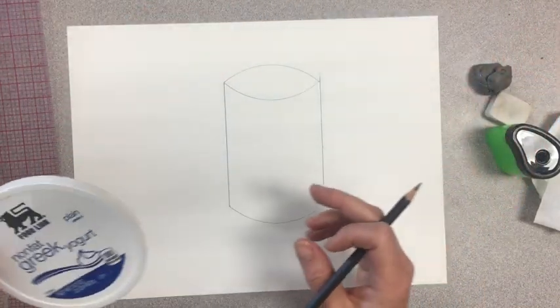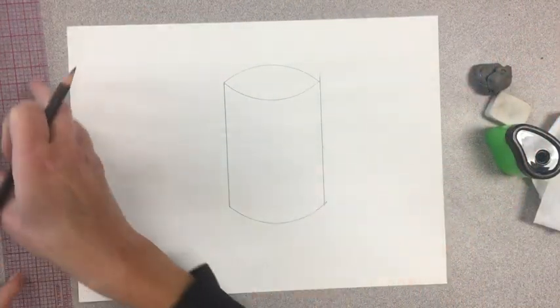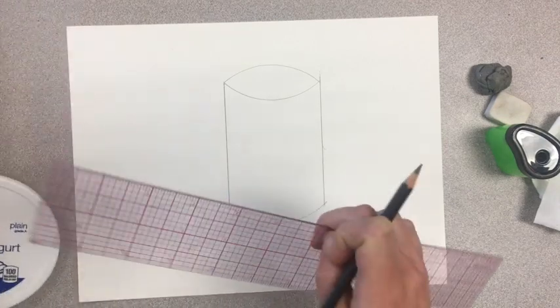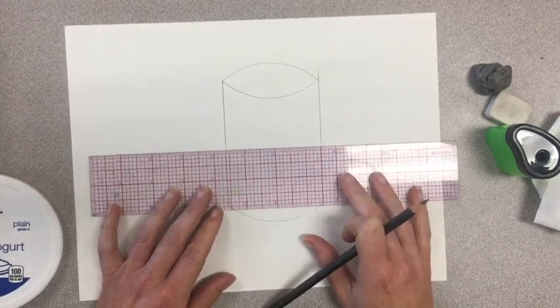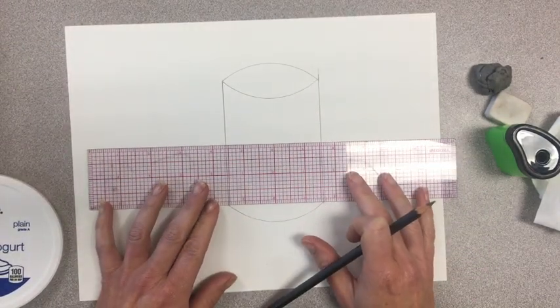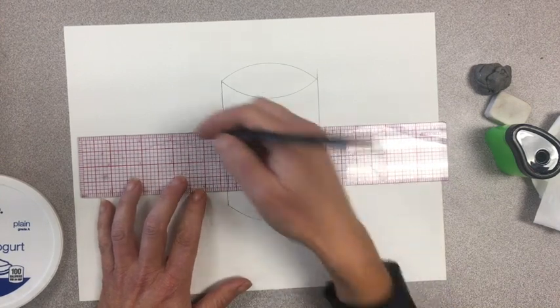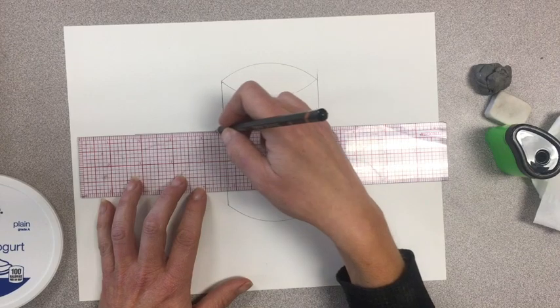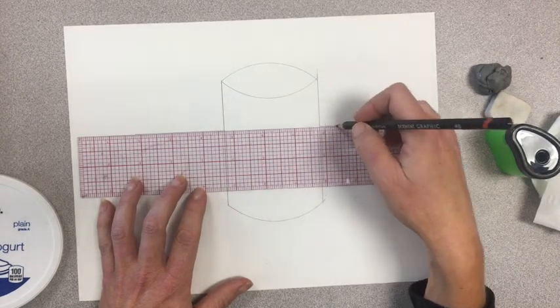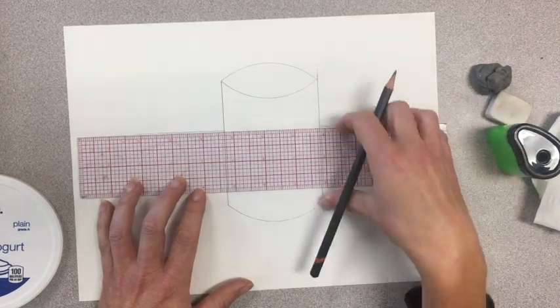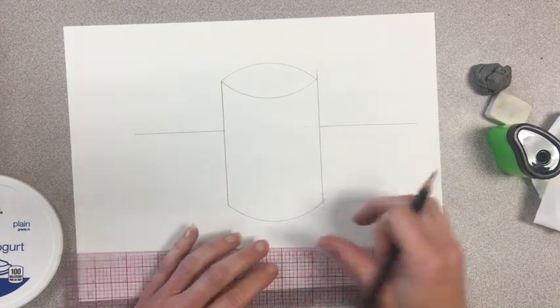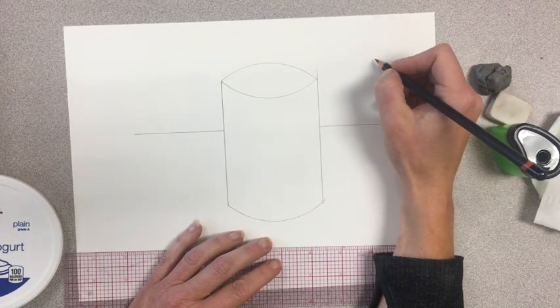Now before I start shading, the last thing that I'm going to do is grab my ruler, and I'm going to make a horizontal line. This horizontal line is going to represent the table or what the cylinder is going to be sitting on.